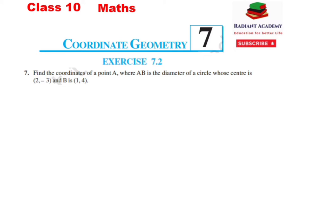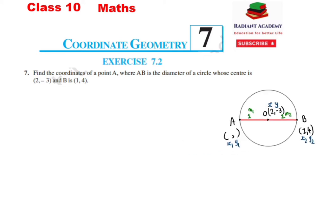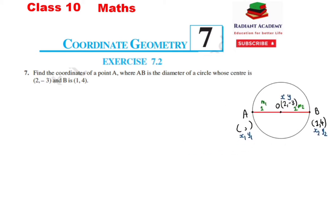Ab ye question ko achhe se hum circle par present karte hain. Circle kuch is tarike se prepare kar dena hai, toh kaafi aasan ho jaayega aapko is question ko understand karna. Ye hai AB diameter, jahan par B point ke coordinates given hain 1,4 aur O point jo center point hai uske coordinates given hain 2, minus 3. Aur A point ke coordinates use hamen determine karna hai. Jaise hum jaante hain ki diameter jo hota hai woh always center se pass hota hai.